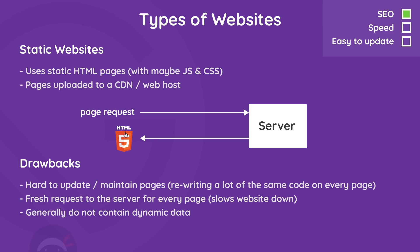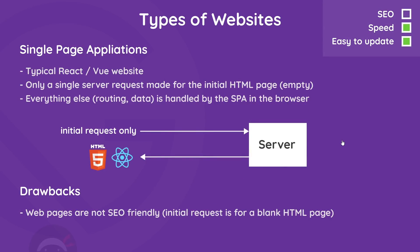The next type of website is a single page application, or SPA for short — your typical React or Vue website — whereby we only need to make a single initial server request for a blank HTML page, then React or Vue controls all of the content, pages, and data fetching from the browser. There are no extra requests to the server for pages, which makes the website faster than a traditional static site, and because it's component-driven, updating something like a footer or header is easy — just update that one single component.